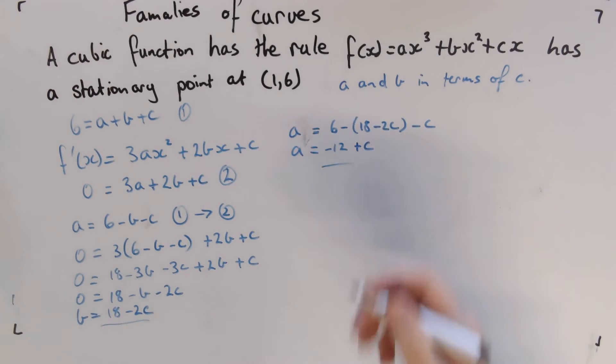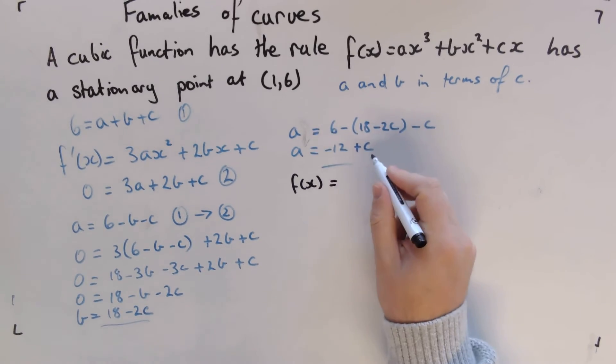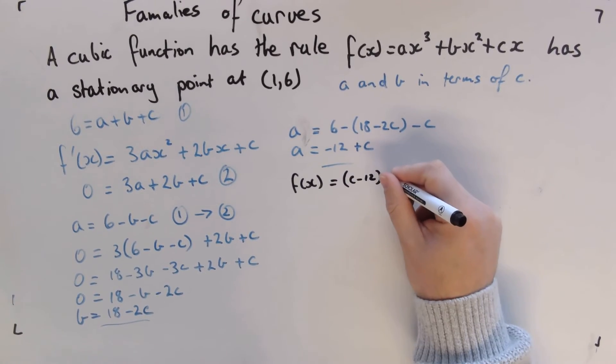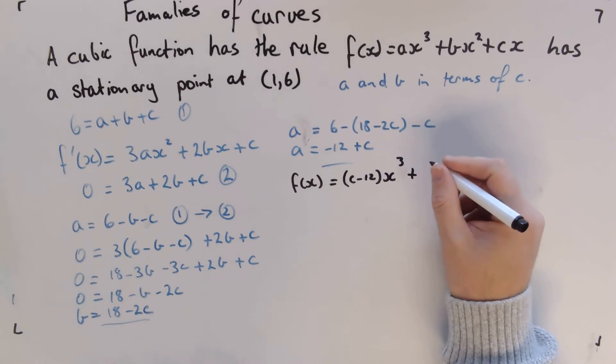So we're going to say f(x) equals, and we make this c - 12 looks a little bit nicer, so (c - 12)x³ + (18 - 2c)x² + cx.